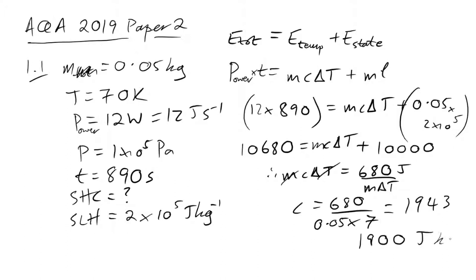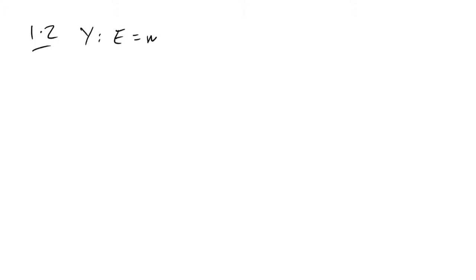The unit is joules per kilogram per Kelvin. Question 1.2: we're talking about the work done by nitrogen when expanding, and the energy required to change state from liquid to gas. Let's deal with the energy to change state first — that's just mL, which we calculated as 10,000 joules or 1×10⁴ joules.